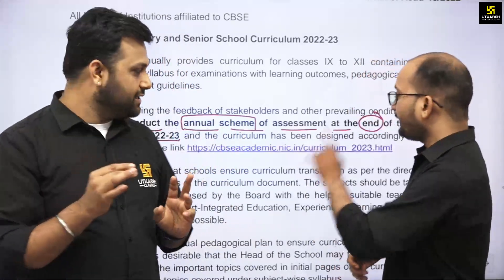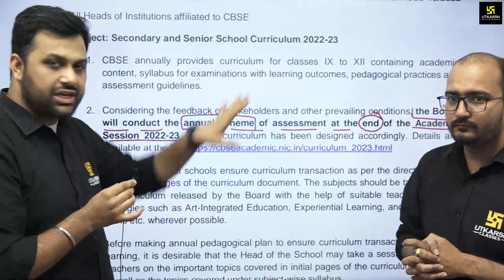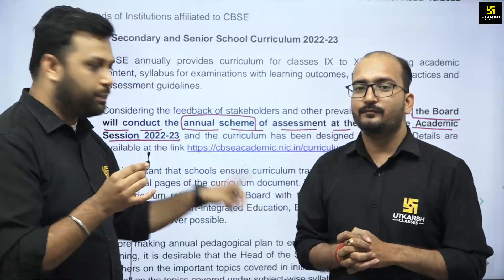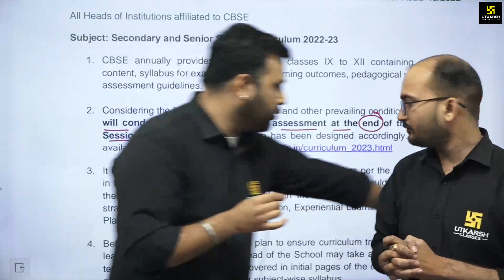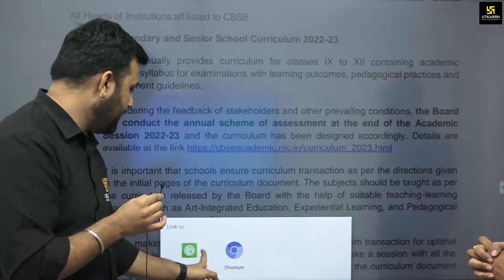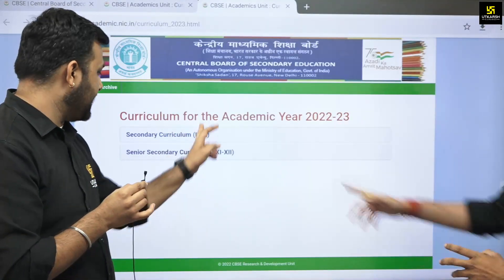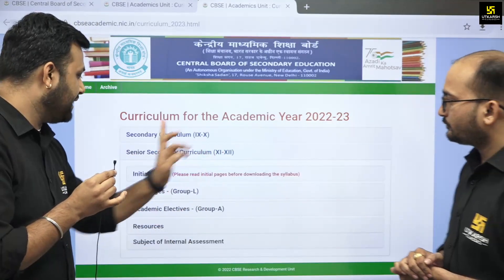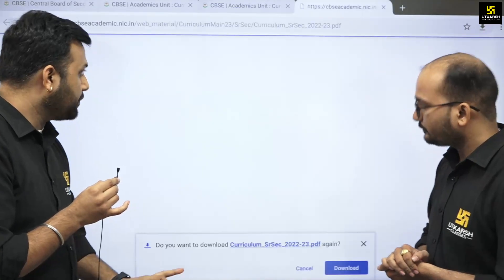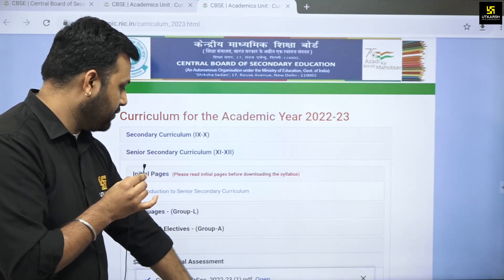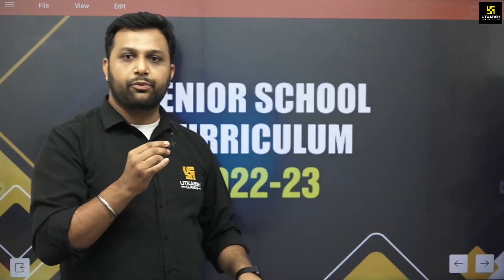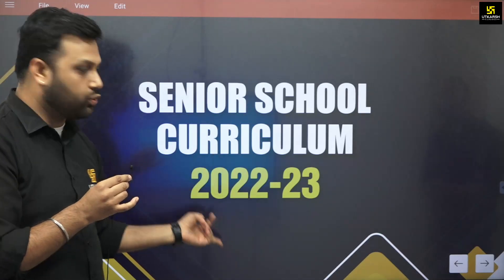The link is given on screen — you can click on it, and you will also find the link in the description. Clicking it will redirect you to the CBSE website where you can access the curriculum PDF. When you open it, you will be redirected to another link where you can find the full curriculum — for classes 11th, 12th, 9th, and 10th. This is the senior school curriculum 2022-23.